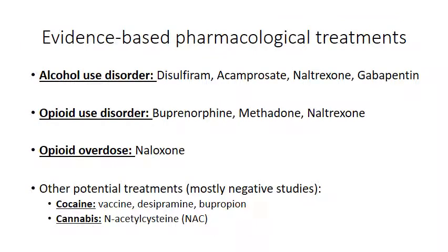We have evidence-based pharmacological treatments, especially for alcohol use disorder and opioid use disorder. The FDA has approved three agents for alcohol use disorder: disulfiram, acamprosate, and naltrexone. Gabapentin is an off-label medication also used for alcohol use disorder. For other substances like cocaine and cannabis, most studies have been negative, though there are anecdotal reports of treatments such as bupropion or mirtazapine — an emerging agent for methamphetamine use disorder, still in trials and not recommended for wide use.